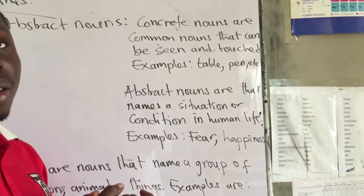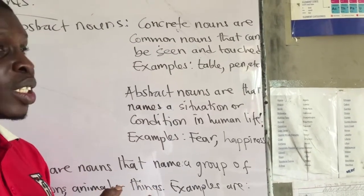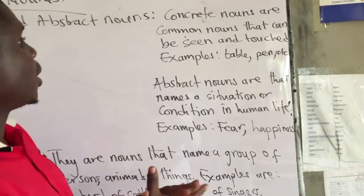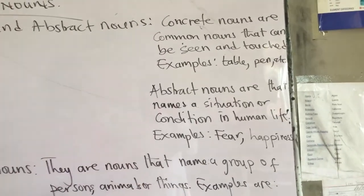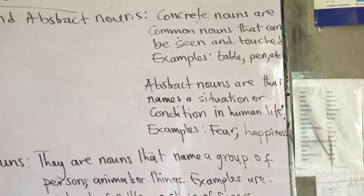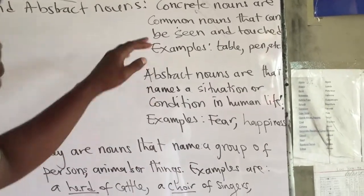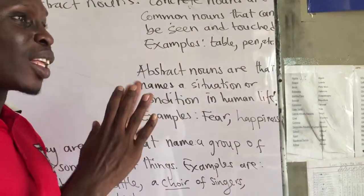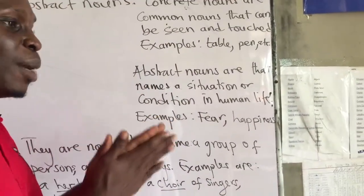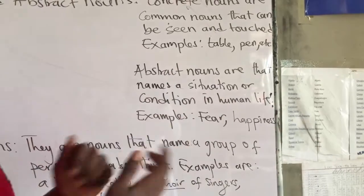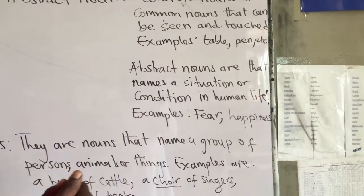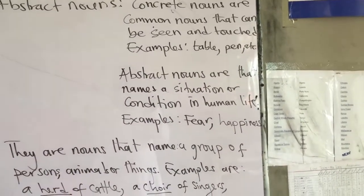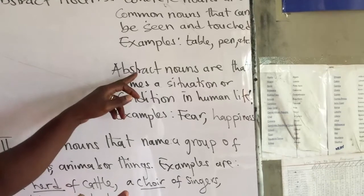That is how you identify concrete nouns and how you use them. Because they are common nouns, you do not begin them with capital letters in the middle or at the end of a sentence — unless they are the beginning of that sentence. Now let's move on to abstract nouns.